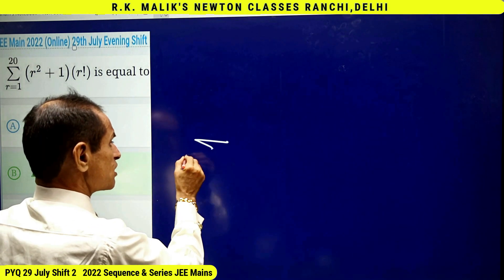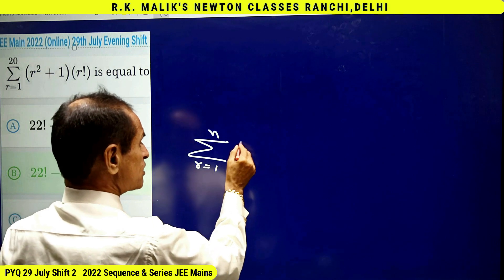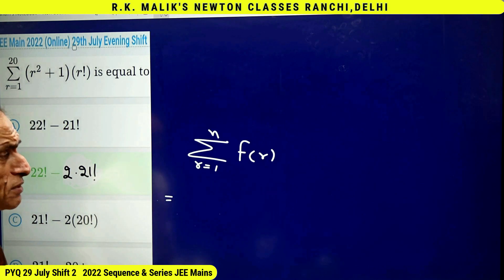In short: suppose r goes from 1 to some number n and some expression in r is given. The telescopic sum method says to express f(r) in terms of g(r+1) minus g(r), where g is some function. You have to adjust the expression in such a way, and how this function will be obtained is just common sense.